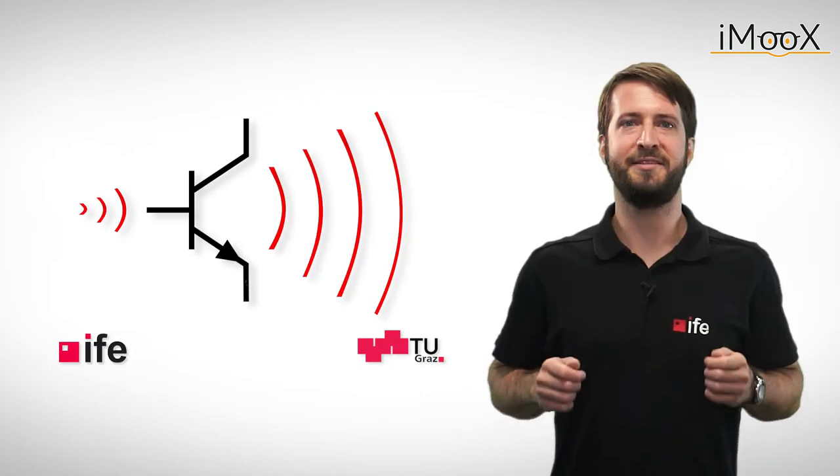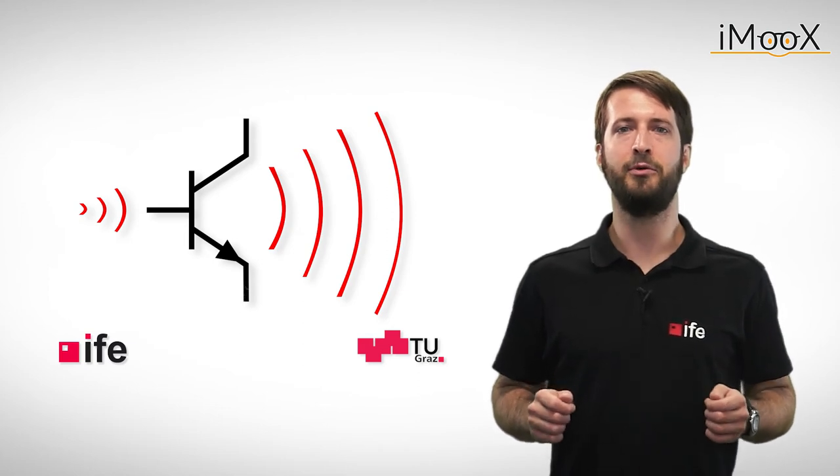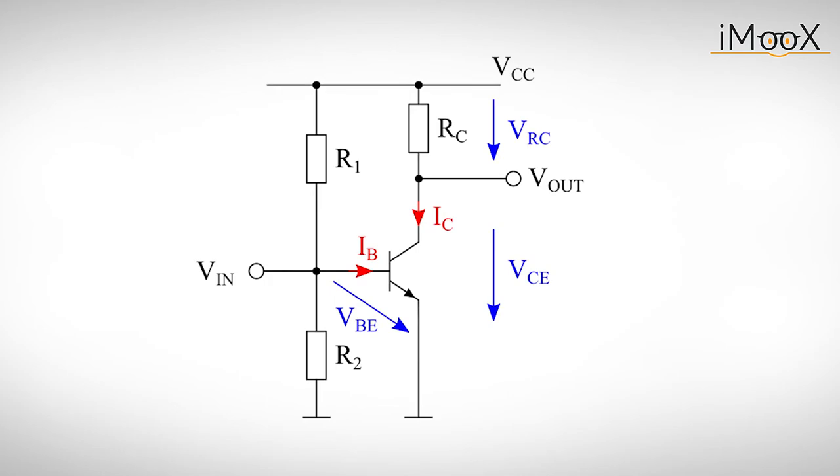Now let's explore the usefulness of these three graphs we just derived by considering the voltage amplifier circuit from before. For the sake of simplicity, we make the emitter resistor zero ohms by connecting the emitter directly to ground. Now our output voltage is simply the collector emitter voltage VCE.